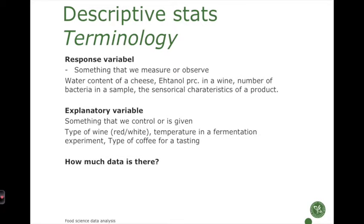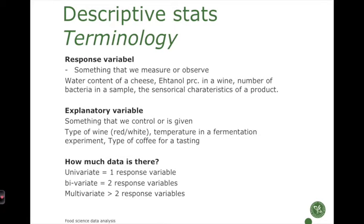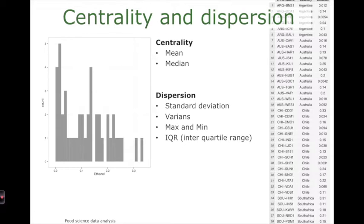How much data there is refers to the notion of univariate — that is one response variable — bivariate meaning two response variables, and multivariate meaning more than two response variables. Now let's look at centrality and dispersion.